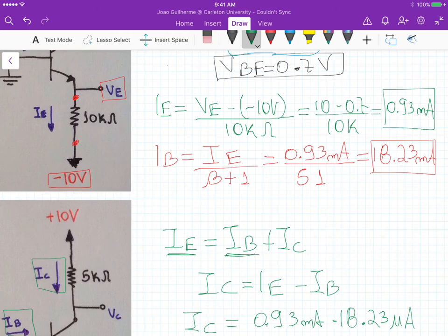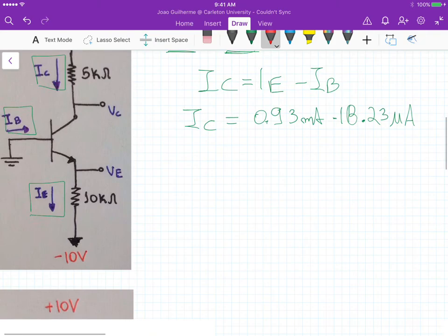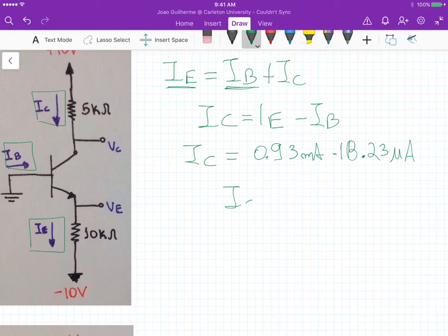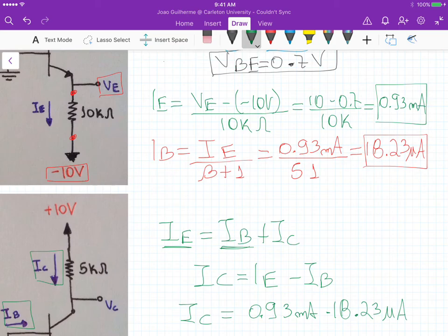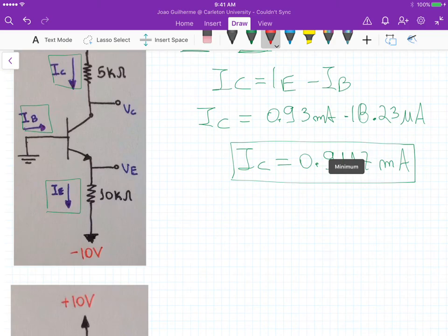Which in this case gives us a total IC that's equals to 0.9117 milliamps. So this is the collector current, and we are allowed to use these equations here, because we are assuming active mode operations.